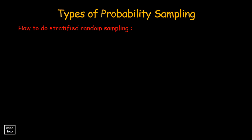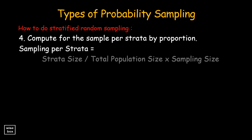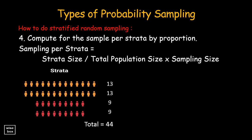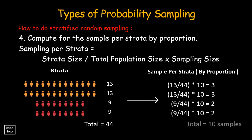Then compute for the sample per strata by proportion. Sampling per strata equals strata size divided by total population size, multiplied by sampling size. Thus, in our example, in the first group we'll get 3 samples, also 3 on the second, 2 from the third, and also 2 samples from the fourth group.